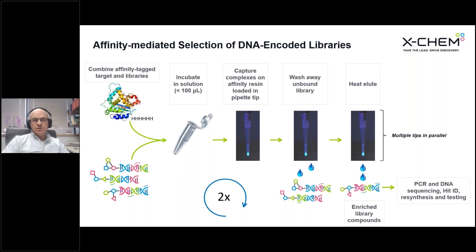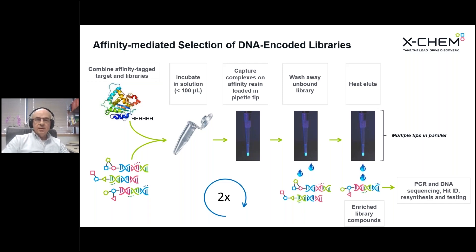How do we use these libraries to actually discover the molecules within them that have the characteristics we want? We take the libraries in solution, combine them together to generate library decks, add protein in solution, give that mixture an opportunity to equilibrate, and then capture the protein on an affinity matrix. Any associated library members will be co-captured. We then stringently wash away library members that do not bind, and elute the library members that do bind. Typically, we put this through two sequential selection rounds, so the output of the first round goes into the second. Then, by PCR and sequencing, we can have a very deep sampling of the output population. By comparing that with the input population, we can determine which compounds are enriched and therefore likely to bind to the target.